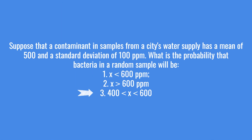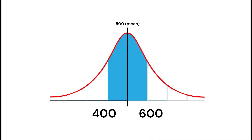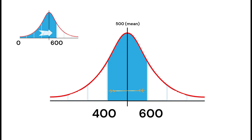Finally we want to figure out the between probability. The question is asking us what is the probability that the bacteria count will be between 400 and 600. The easiest way to visualize this is to look at a sketch. Here is what we are looking for — this between probability between 400 and 600. We already calculated up to 600 and we already calculated the white area over 600.